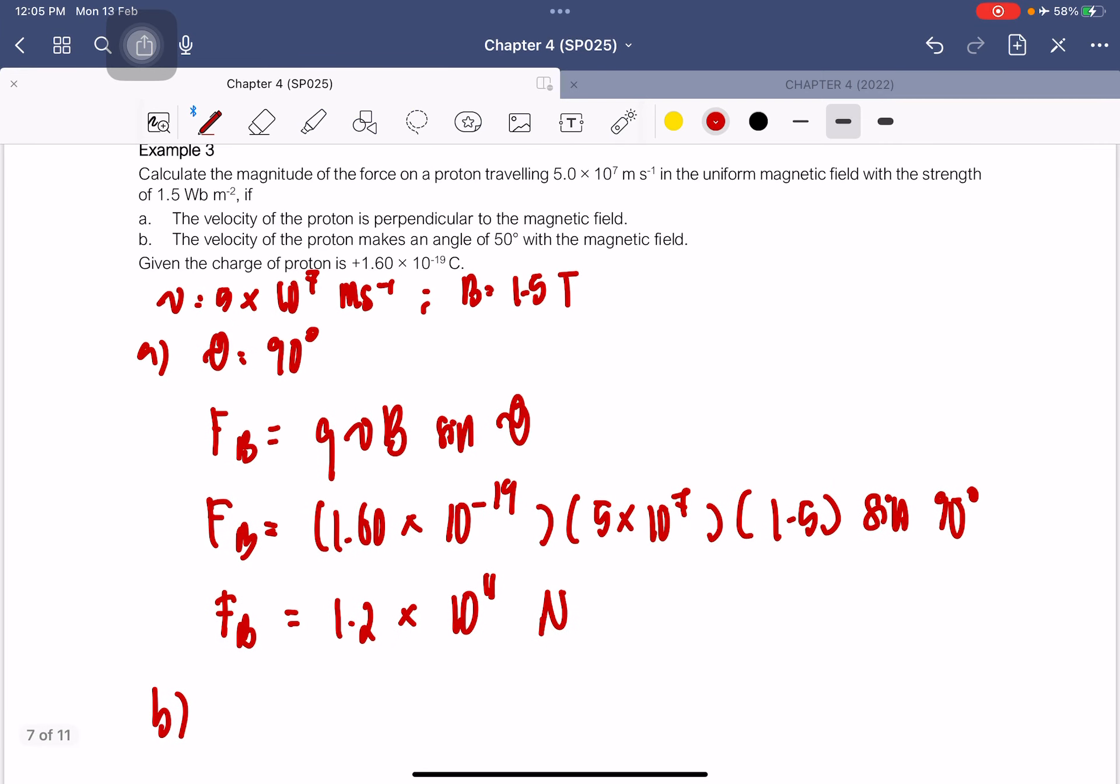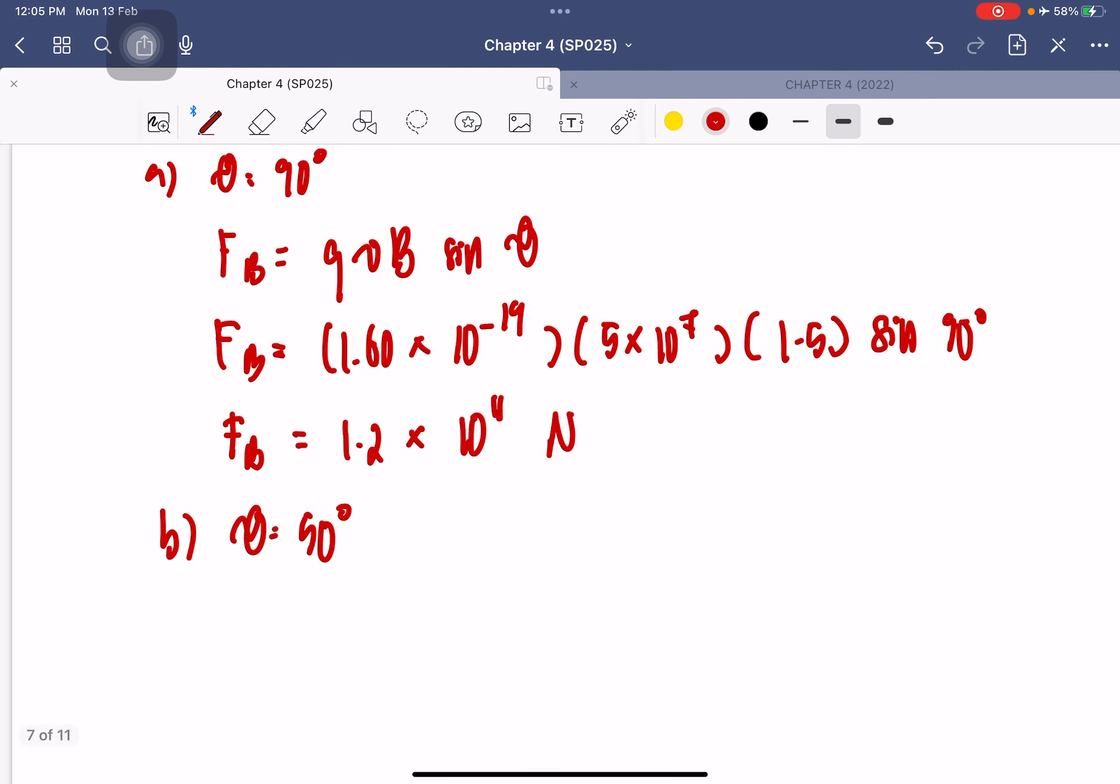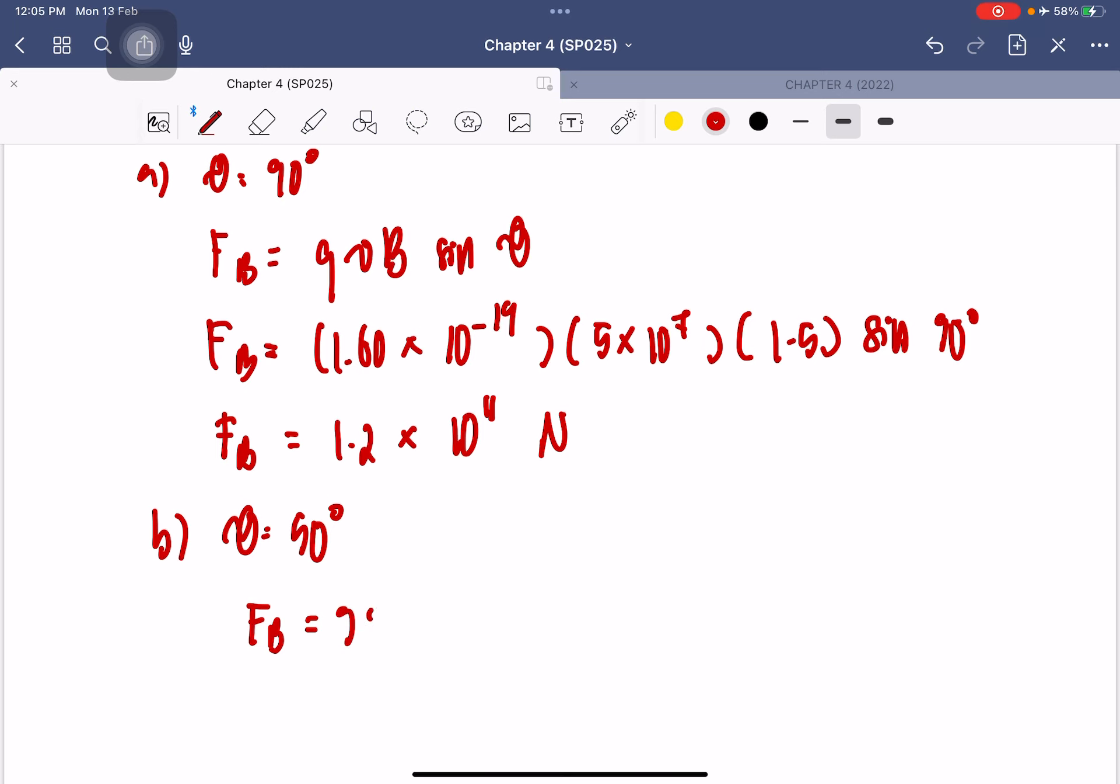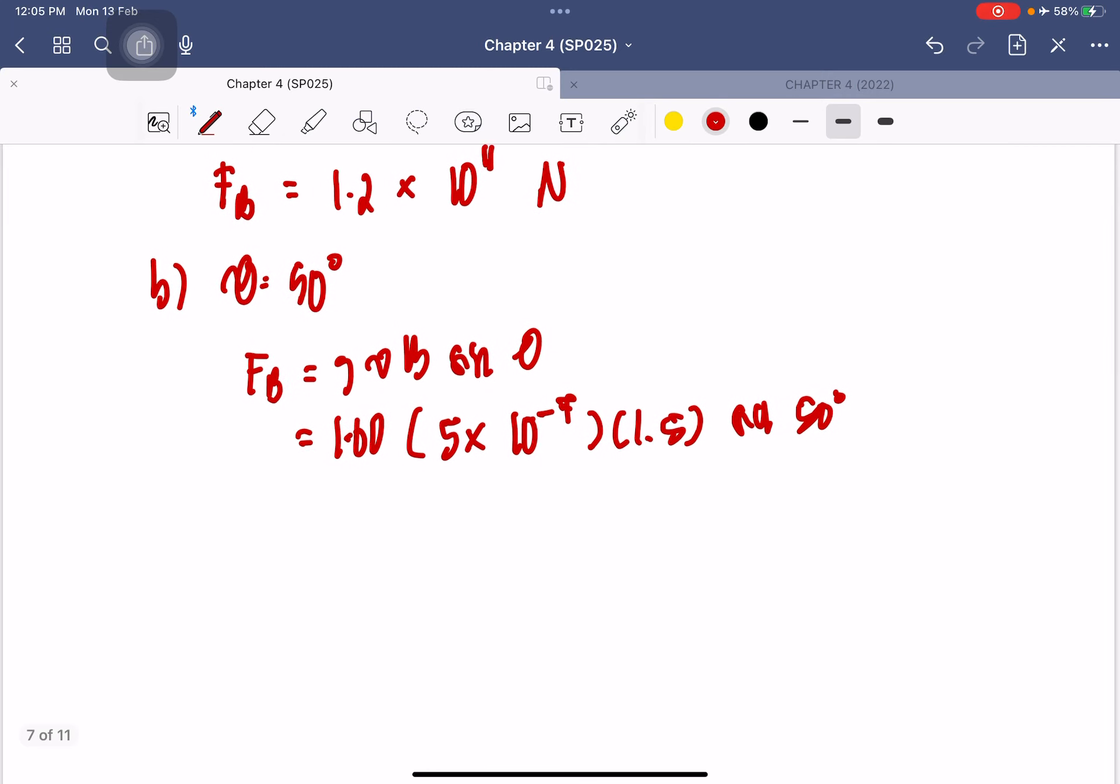If the velocity of the proton makes an angle of 50 degrees with the magnetic field, now the angle is 50 degrees. So you just substitute in the formula. This is 1.6 × 10^-19, this is 5 × 10^7, 1.5, sin 50 degrees.